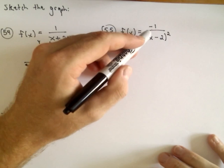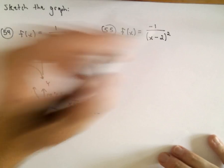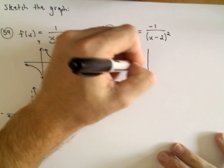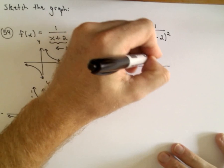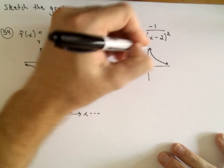So, okay, we've almost got the same thing here. We've got negative 1 over x minus 2 squared. Well, recall that 1 over x squared looks like this.